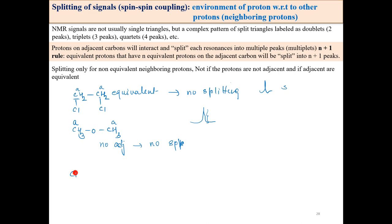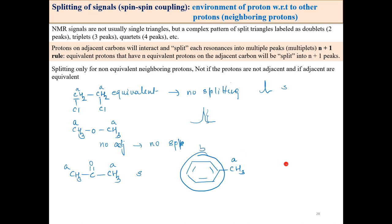For CH3-CH(CH3)-Br: the two CH3 groups are both type A (same environment), and the CH is type B. So two signals. A splits because of B (1 proton): 1+1=2, a doublet. B splits because of all 6 CH3 protons (3+3), giving a multiplet. When two non-equivalent groups of neighboring protons both contribute, we call the resulting pattern a multiplet. This is how the splitting takes place.